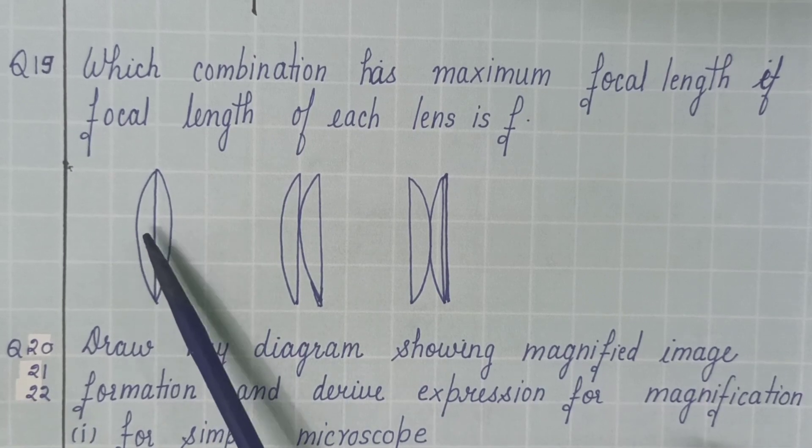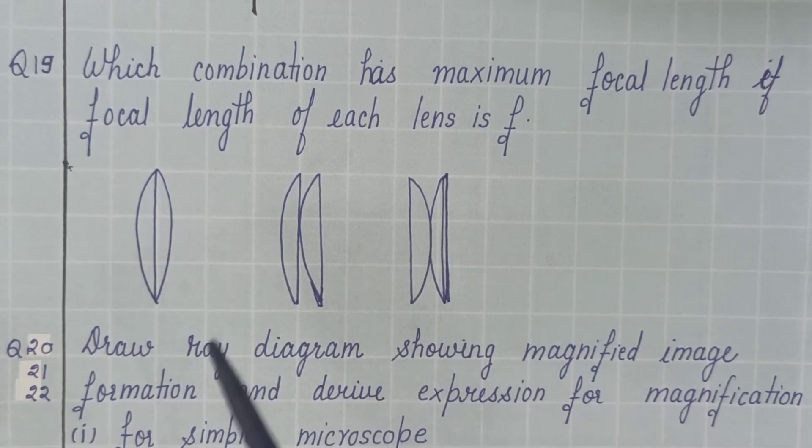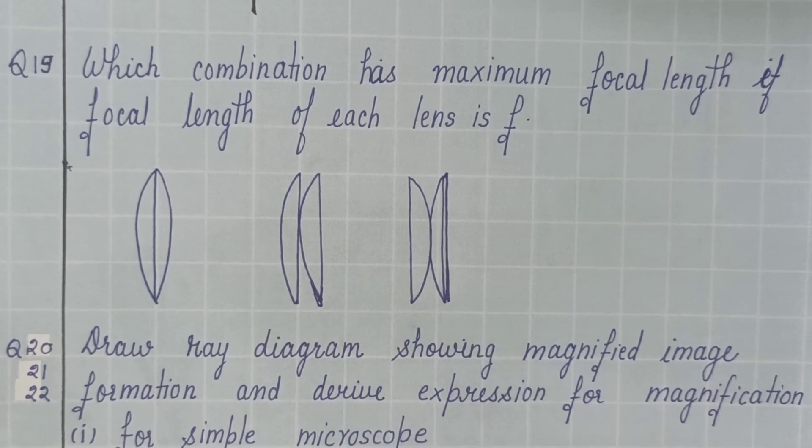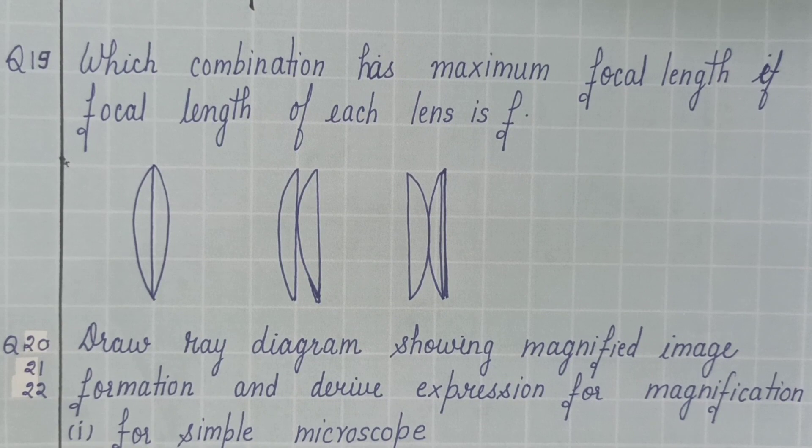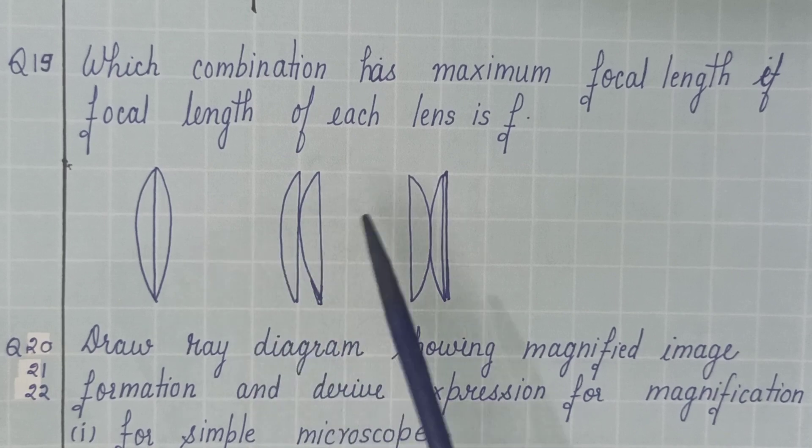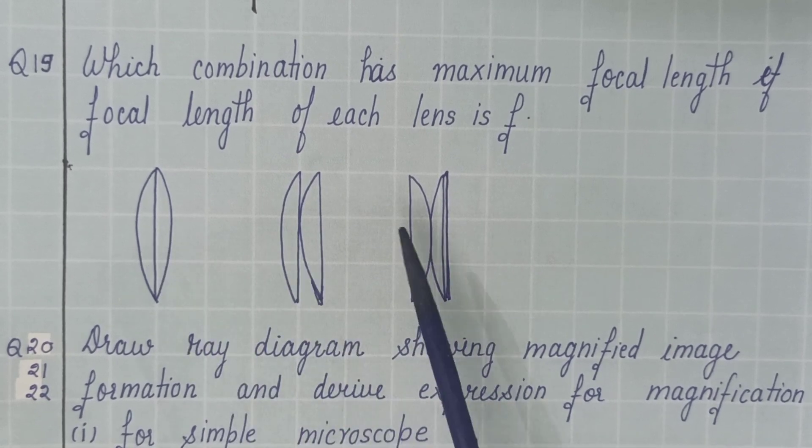So just remember children, no matter how these lenses are placed, if you will calculate the combination of the two lenses, where each lens carries focal length f cm, the combination's focal length will be same. There will be no difference, no maximum or minimum focal length among these three orientations.